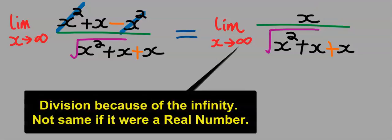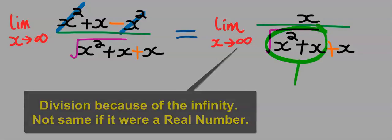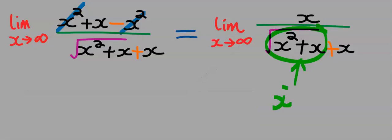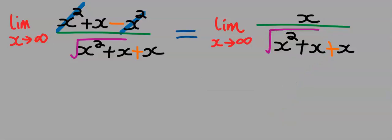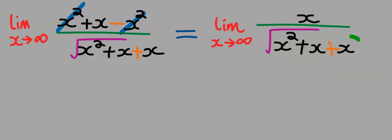At the denominator, everything inside the square root I'm going to divide by x squared, because x squared is the highest power of x. That is, this will be divided by x squared and this will be divided by x squared. Next, the x that is not enclosed in the square root will be divided by x.